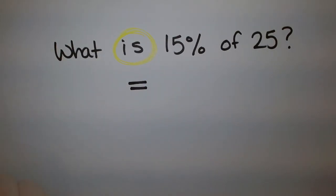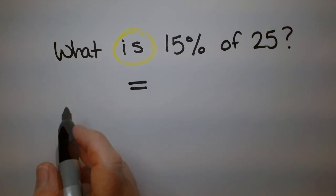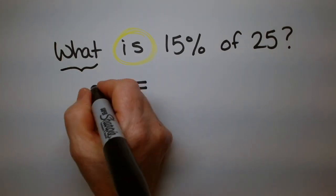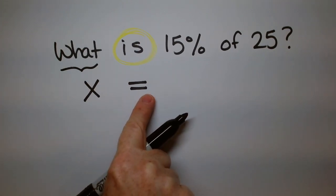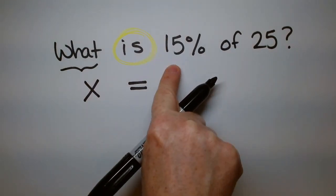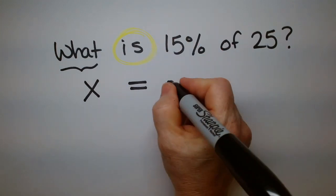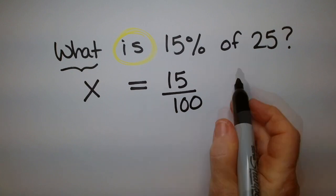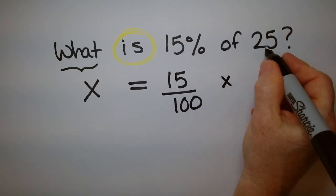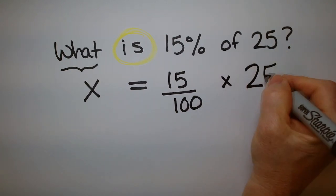So what, that means we don't know what it is. So what is always going to be a variable. You can pick the letter. I like to use X. So what is 15%. 15% means 15 over 100. Of is multiply, and 25 is just 25.